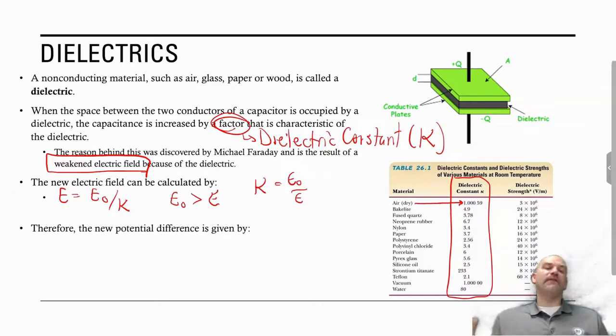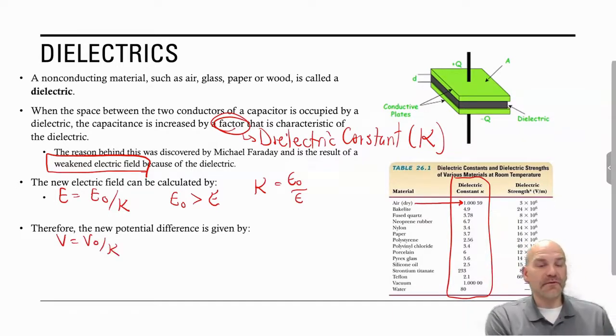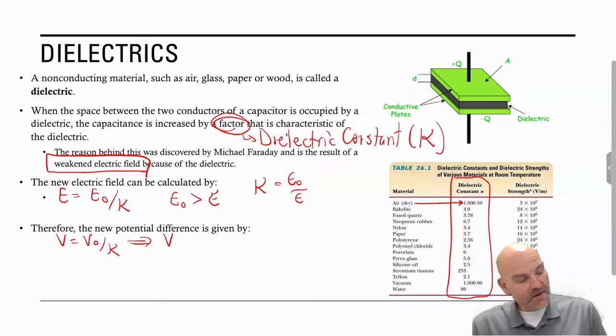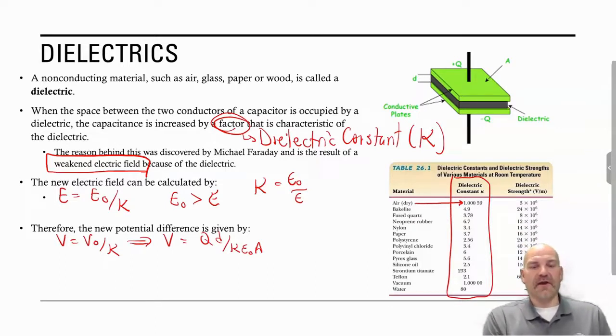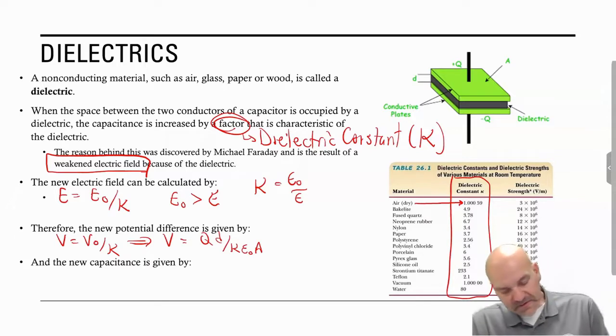It changes everything about that capacitor. It changes the E field between the plates. It changes the electric potential. It's simply going to be V zero, your initial voltage divided by your kappa. And if we have a parallel plate capacitor, it's just simply going to be QD over kappa epsilon naught A. This is basically saying 1 over K times our initial voltage. Which means now the capacitance changes. So it's going to be C zero is KC.